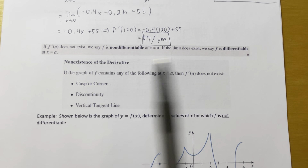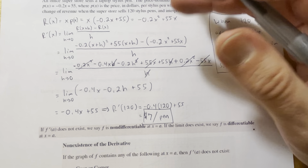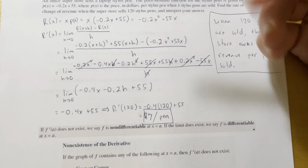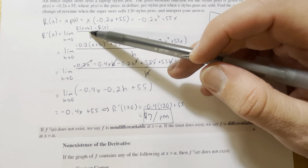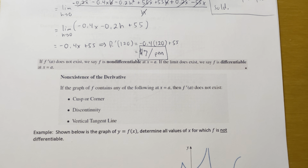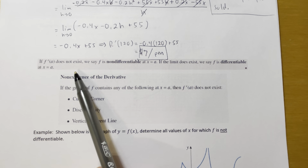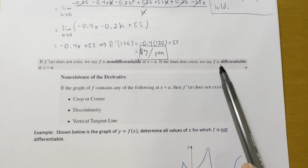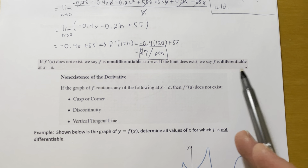Some terminology: we've been taking derivatives of functions using the limit definition, but as we've seen with limits throughout Chapter 1, limits can fail to exist for a variety of reasons. So we could look at functions where that derivative — that limit of the difference quotient — fails to exist. When that happens, we say that f is non-differentiable. If f prime of a for some number a does not exist, then f is non-differentiable at x equals a. If that limit does exist, then f is differentiable at x equals a, meaning the derivative exists.